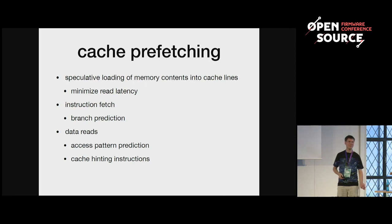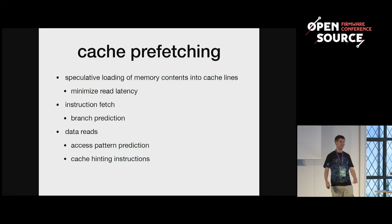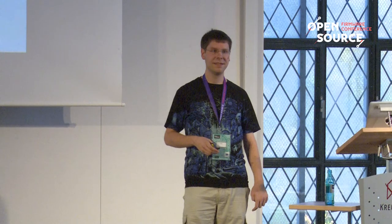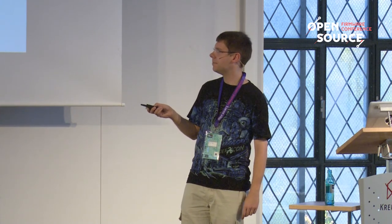You also want data to already be in the cache when you access it, so there's cache prefetching. For instructions, branch prediction is used — the processor predicts which instructions will be executed, and the prefetcher tries to make sure those instructions are already in the instruction cache. The same applies for data reads — the processor tries to detect access patterns. There are also cache hinting instructions where you can tell the processor not to cache certain data to avoid invalidating a lot of cache lines, or to tell it you need certain memory already loaded into the cache.